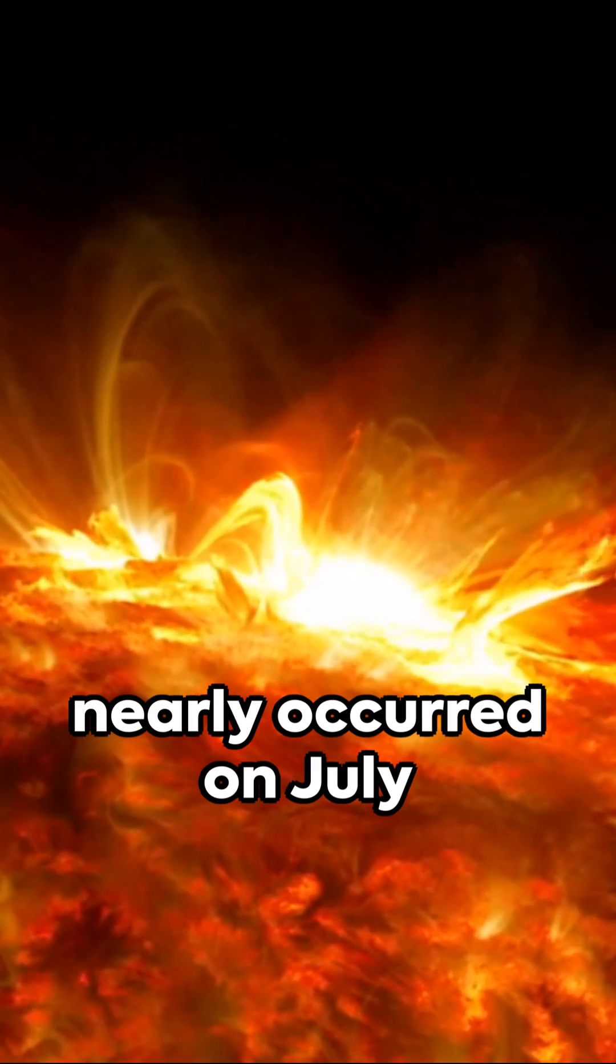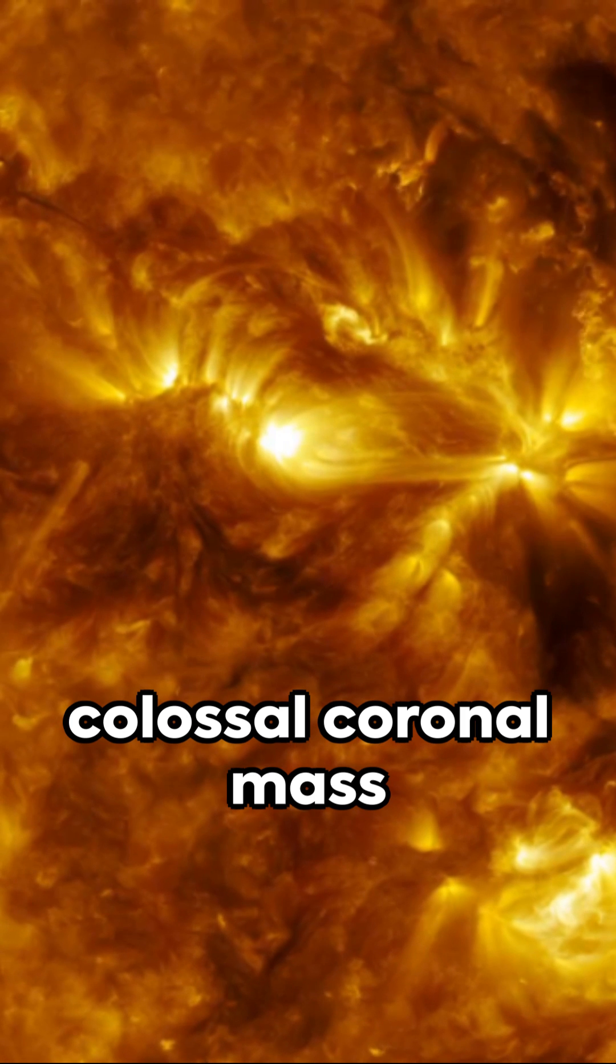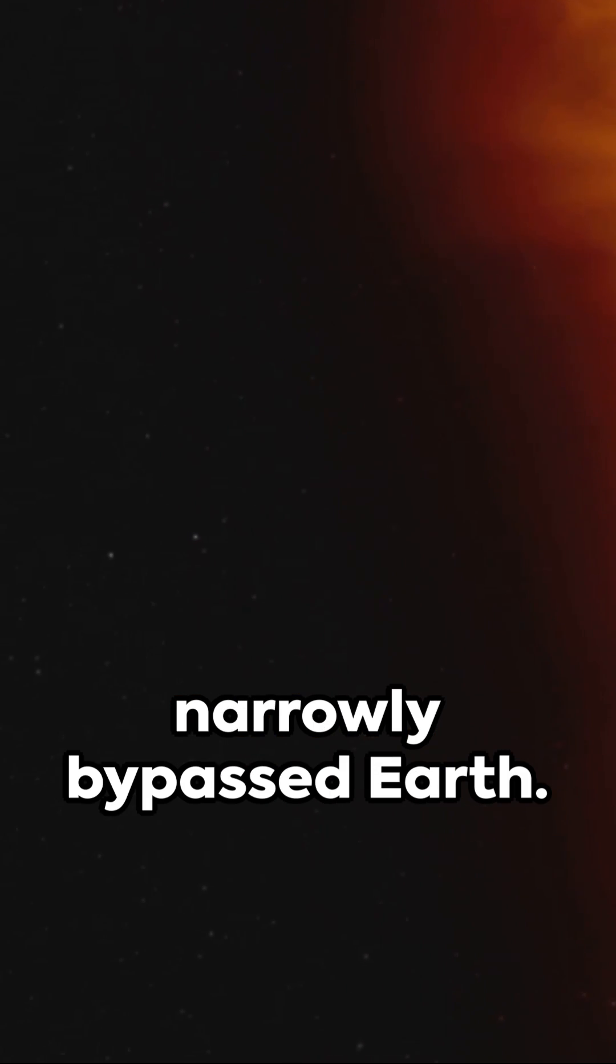A cataclysmic event nearly occurred on July 23rd, 2012 when the Sun erupted, releasing a colossal coronal mass ejection, or CME, which narrowly bypassed Earth.